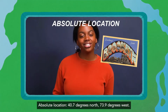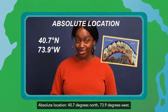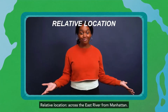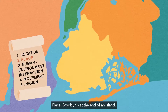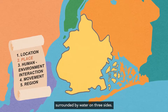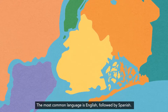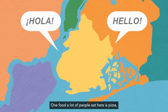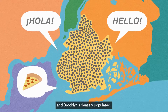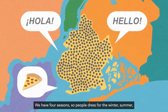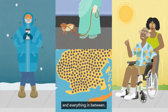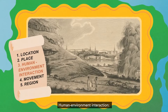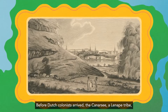Let's try this for where I live — Brooklyn, New York. Location: absolute location is 40.7 degrees north, 73.9 degrees west; relative location is across the East River from Manhattan. Place: Brooklyn's at the end of an island, surrounded by water on three sides. The most common language is English, followed by Spanish. One food a lot of people eat here is pizza, and Brooklyn's densely populated. We have four seasons, so people dress for the winter, summer, and everything in between.